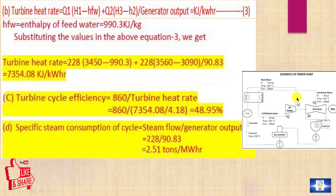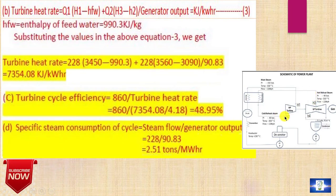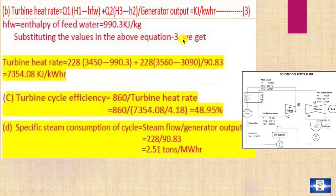The turbine heat rate equals [Q1 × (H1 − HFW) + Q2 × (H3 − H2)] divided by generator output. Here, HFW = 990.3 kJ/kg. Substituting: main steam flow 228 TPH × (3450 − 990.3) + 228 × (3560 − 3090), divided by generator output 90.83 MW. The turbine heat rate is equal to 7354.08 kJ/kWh.